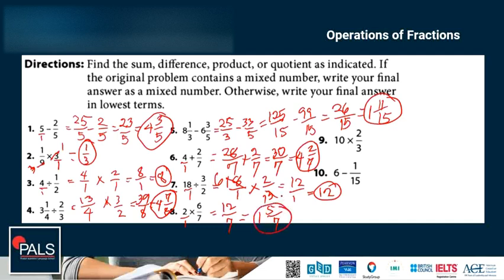Number 9. This is 1. So 10 times 2 is 20 over 3, or we have 6 and 2 thirds.